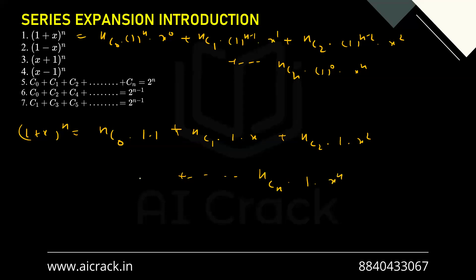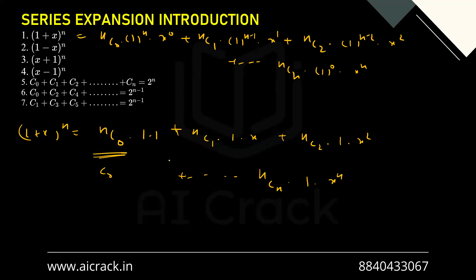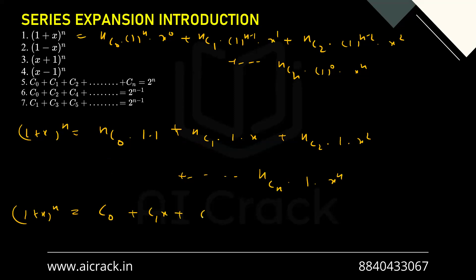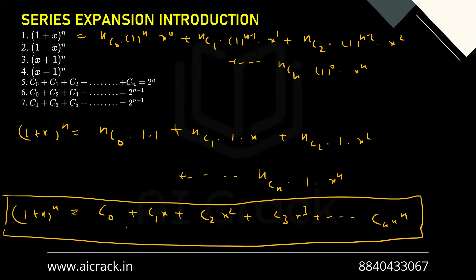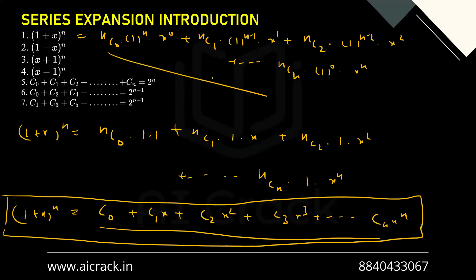To simplify further, we'll write nC0 as C0, nC1 as C1, nC2 as C2, and so on. So this ultimately becomes (1+x)^n = C0 + C1·x + C2·x² + C3·x³ till Cn·x^n. You have to remember this series. Whenever someone says (1+x)^n, this compact form should pop up in your mind.